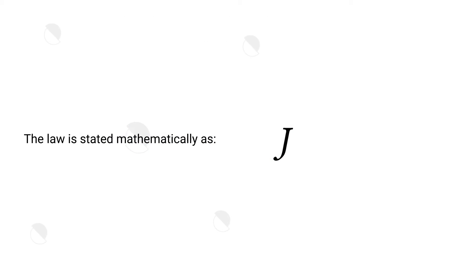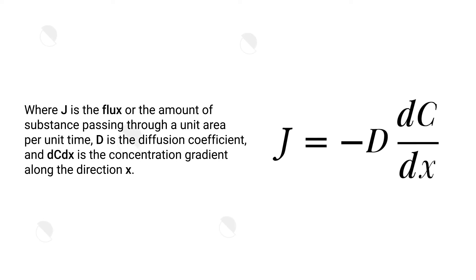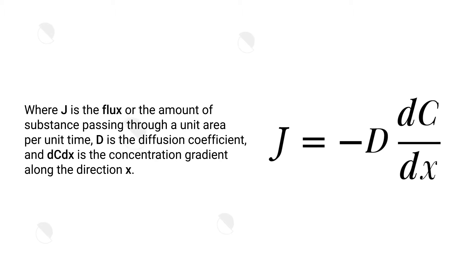The law stated mathematically as the following: J is the flux, or the amount of substance passing through a unit area per unit time; D is the diffusion coefficient; and dC/dx is the concentration gradient along the direction of x.